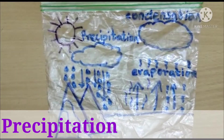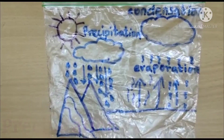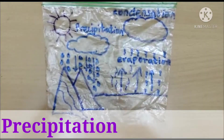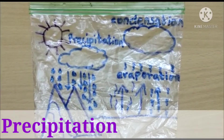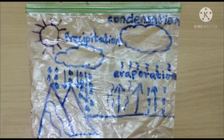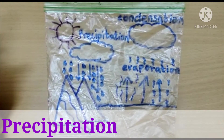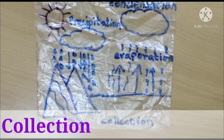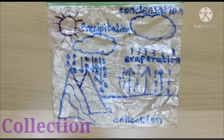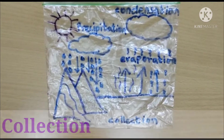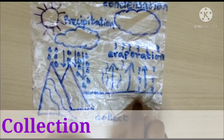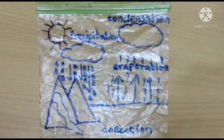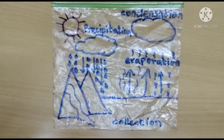The third stage is precipitation. When the water in the clouds gets too heavy for the air to hold, it falls down to the earth as rain, snow, or sleet. The final stage is called collection — the water from precipitation joins a large water body like an ocean, river, or lake. Now the bag is ready.